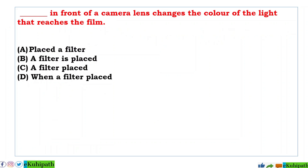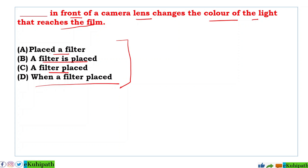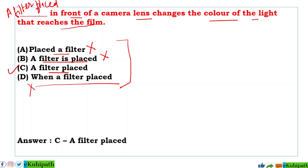Next question: dash in front of a camera lens changes the color of the light that reaches the film. Option A: 'placed a filter', B: 'a filter is placed', C: 'a filter placed', D: 'when a filter is placed'. The answer is C — 'a filter placed'. A filter placed in front of a camera lens changes the color of the light that reaches the film.